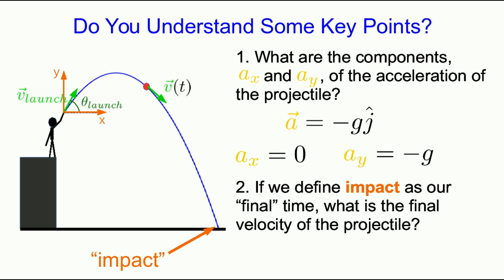The second question is almost a trick, but it's a trick that students often fall for. If we define impact as our final time, what's the final velocity of the projectile? Well, the answer is that we don't know. In general, we would have to solve for it, but you might have been inclined to say that it's zero. If you said it's zero, then you've missed a key point here.